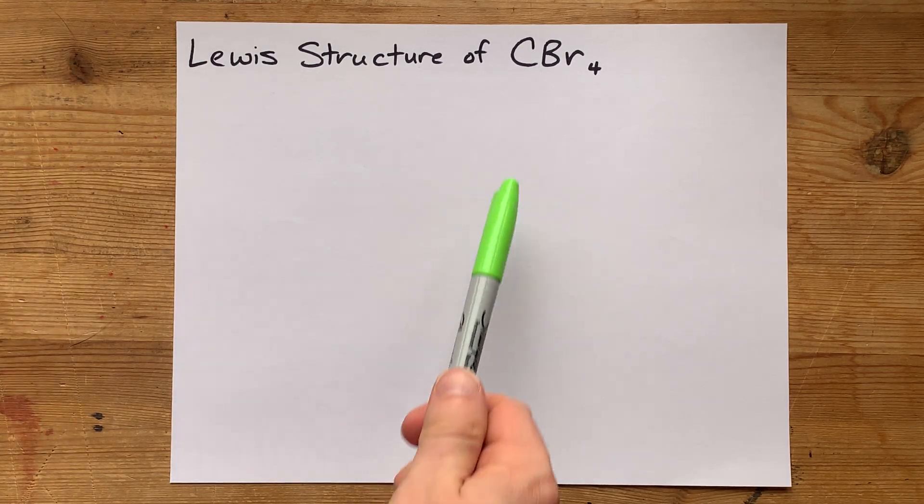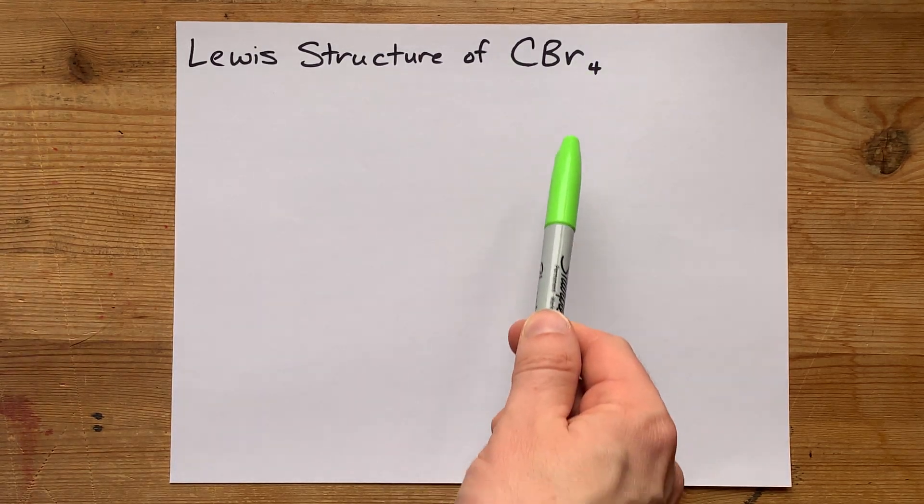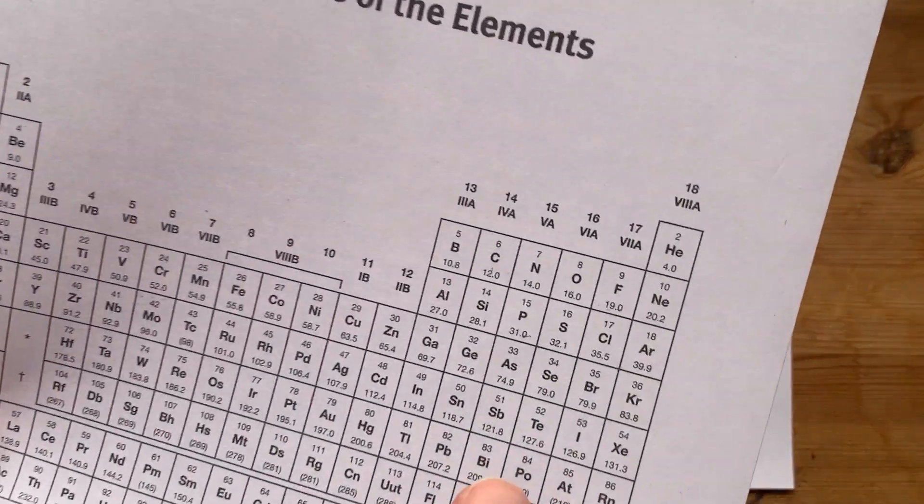We're going to draw the Lewis structure for CBr4, which is tetrabromomethane, or carbon tetrabromide.